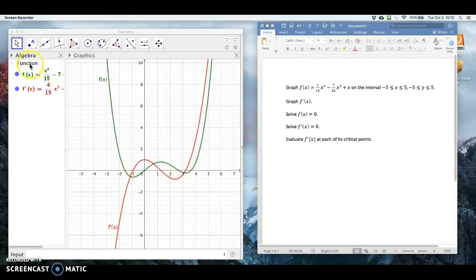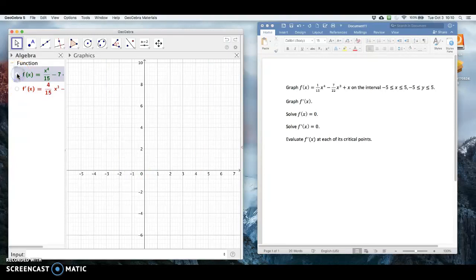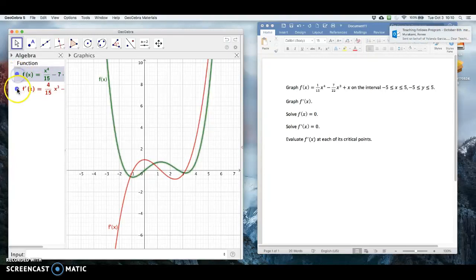So one nice feature of GeoGebra is once you've defined a function or derivative, maybe you want to work with other functions. Instead of deleting these, if you want to keep these stored, we can just click the circle next to it and notice the derivative disappeared. Or I can make the function disappear, or vice versa. So I'm going to keep the f of x here, and we'll keep f prime here. That's a nice feature.